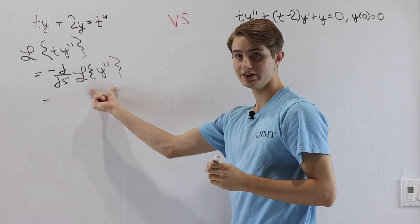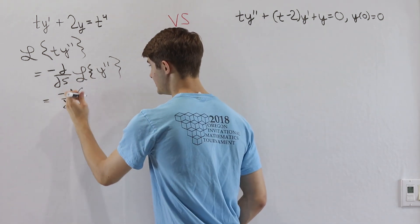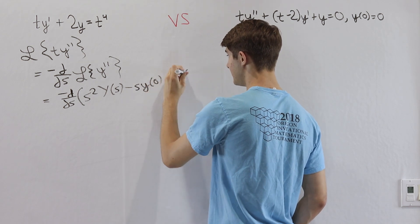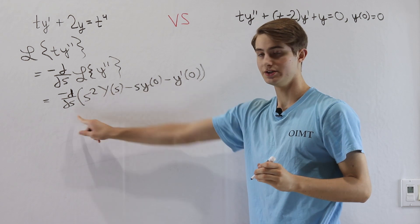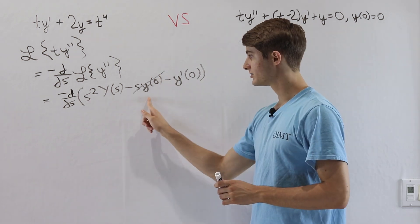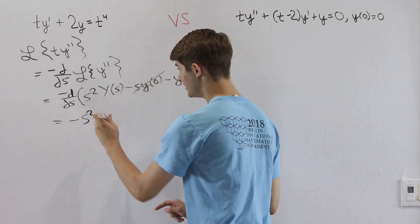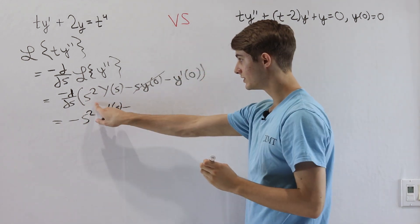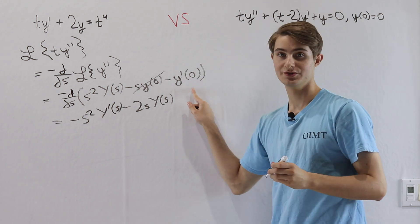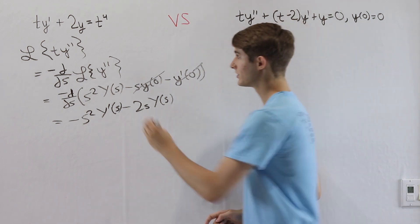The Laplace transform of y double prime is s squared big Y of s minus s times y of 0 minus y prime of 0. Since y of 0 equals 0, that term drops out. Differentiating with respect to s using the product rule gives us negative s squared Y prime of s minus 2s times Y of s. The derivative of y prime of 0 vanishes since it is just a number. This is our first Laplace transform result.